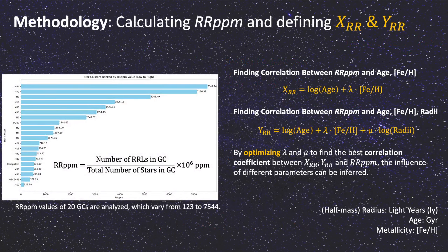After that, the part per million ratio of RR Lyrae stars, or RR PPM, can be calculated. Their relationship with cluster age, metallicity, and radii are then analyzed by optimizing certain coefficients with a Python program.